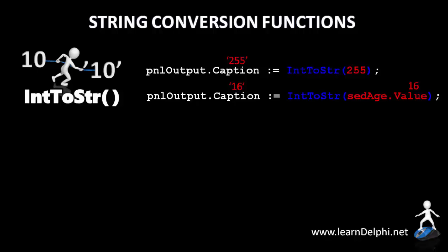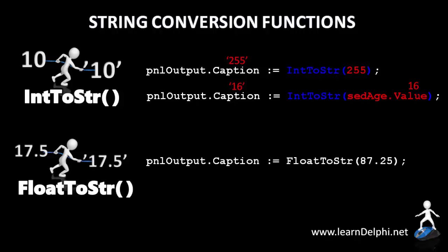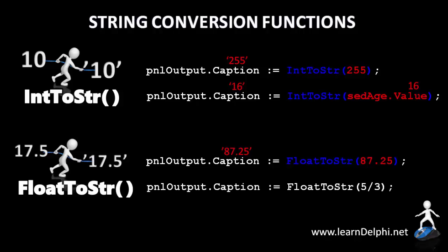A decimal number is not an integer — we refer to them as floating point numbers, or just floats in short. We use the FloatToString function to convert floating point numbers to string values. This statement takes the number 87.25 and passes it to the FloatToString function, which converts it and returns it as a string value displayed as the caption of a panel. Note that the result may be displayed with a dot or a comma depending on the number settings of your operating system. When you divide a number, the result may also be a floating point number — for example, 5 divided by 3 is 1.6666666 continuing on forever. Here I pass that calculation to the FloatToString function, which first does the division and then converts the result to a string value for assignment to the caption of a panel.